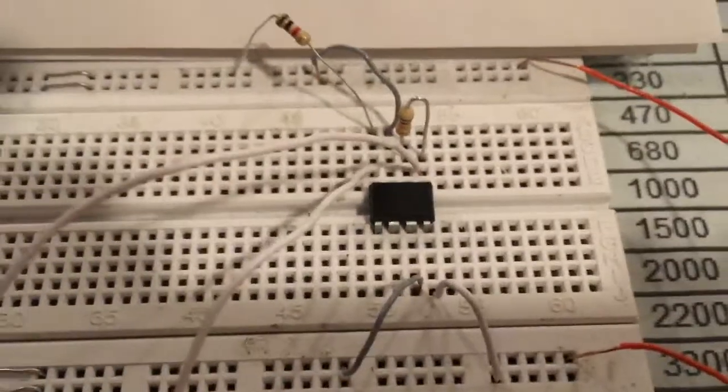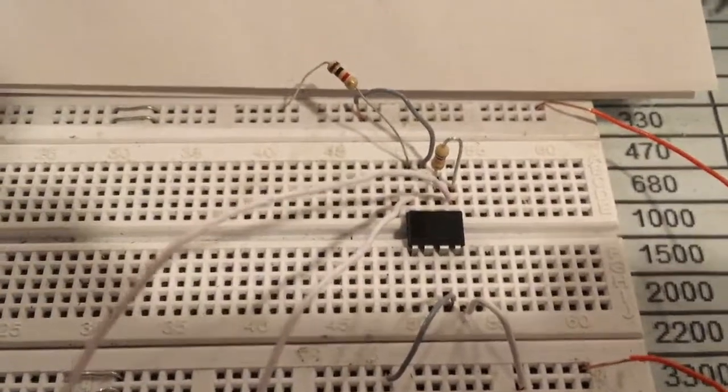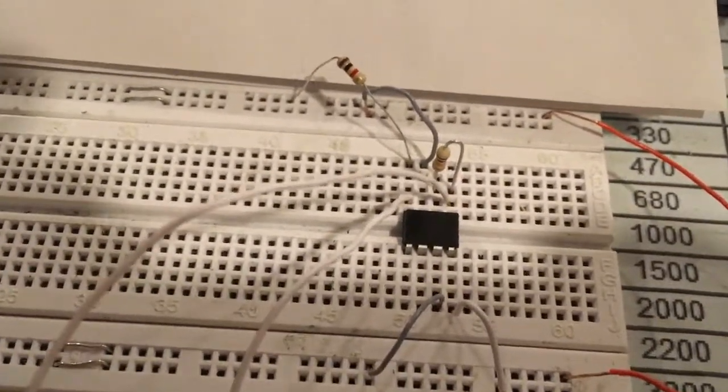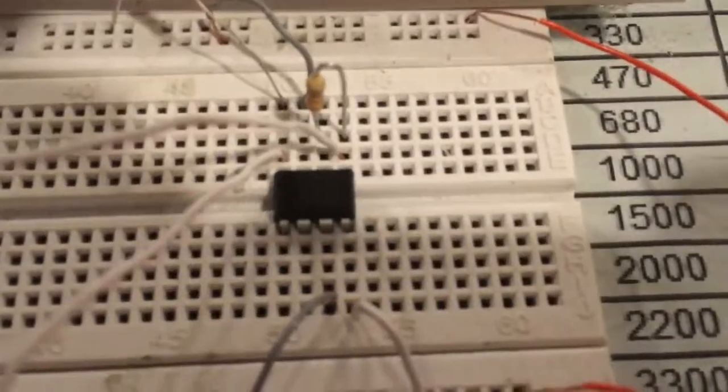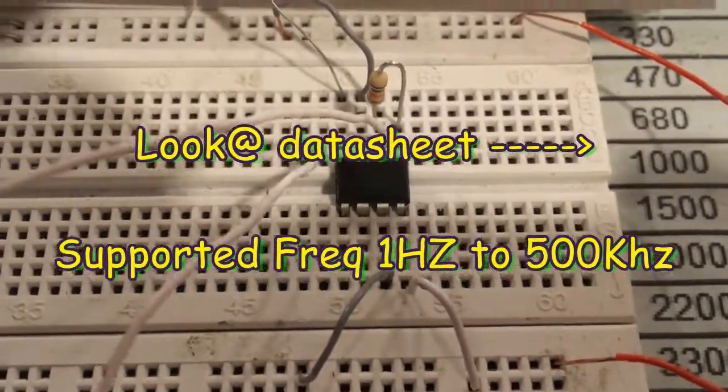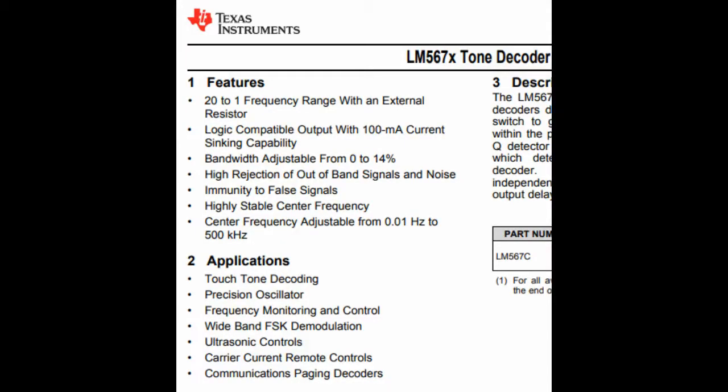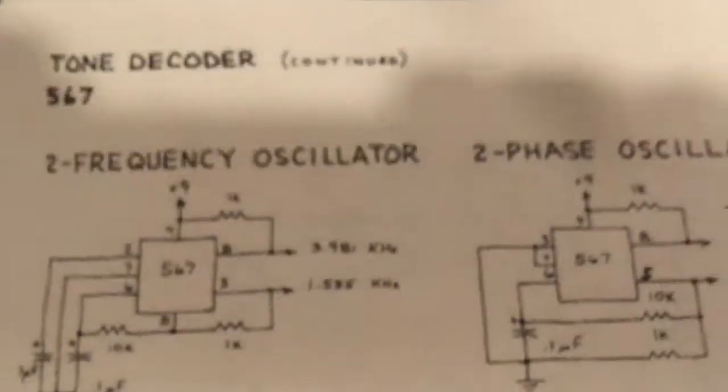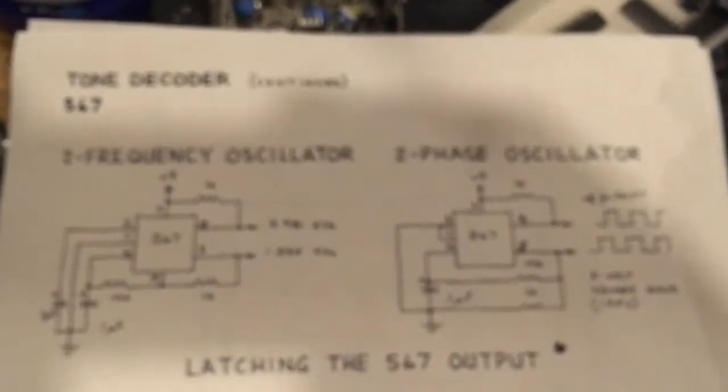And this is the single IC that I have with just 2 resistances. The IC number is 567 and NE567, and this is the schematic.